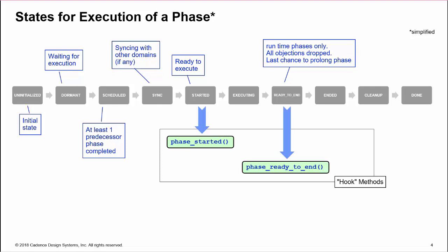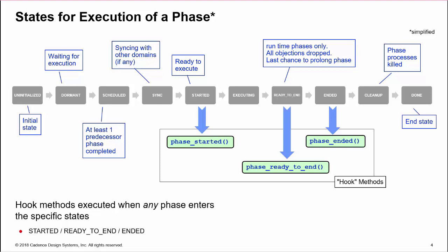More information on this shortly. When the phase ends, we enter state ended with a hook method, phase_ended. Then, in cleanup, we kill off any remaining processes of the phase and transition to the final state done. So, we have three hook methods, which are executed when any phase enters the started, ready_to_end or ended states. In UVM 1.2, we also have callbacks, which are executed on any state transition for a given phase.